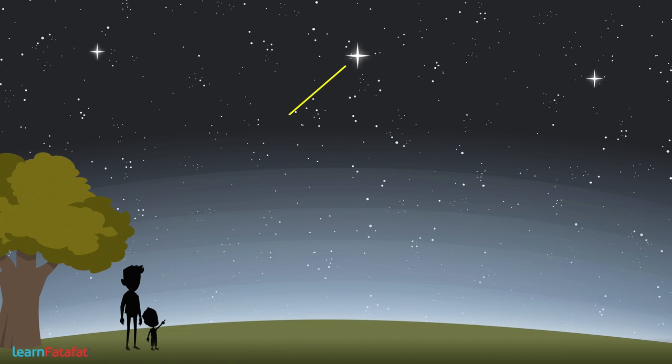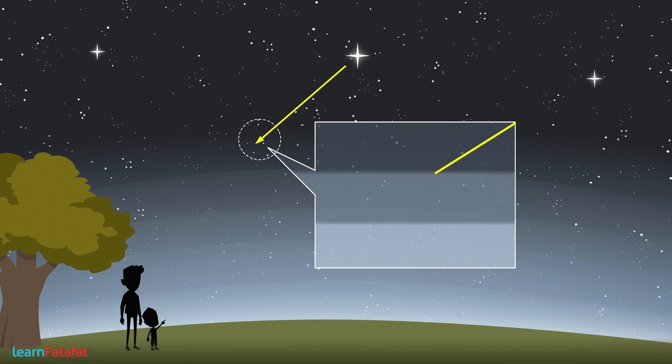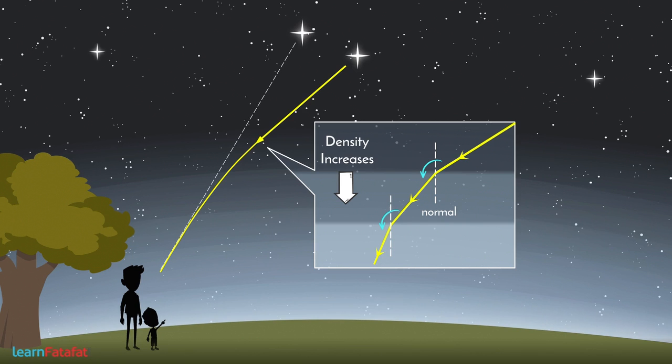The light coming from a star, i.e., starlight, when it enters the Earth's atmosphere layer by layer, experiences increasing density and so bends towards the normal at the boundaries between the layers. When it comes to us, we observe the star to be slightly higher than its actual position.